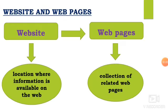Next, we are going to see what is a website and web pages. A website is the location where information is available on the web. In a particular shareable information system, the particular location where that information is stored is called a website. A collection of related web pages is what makes up a website.